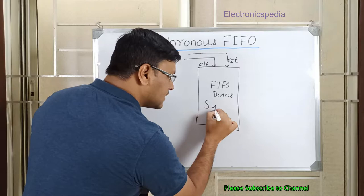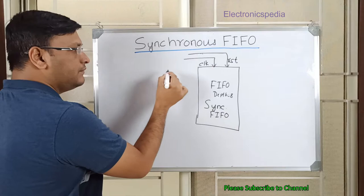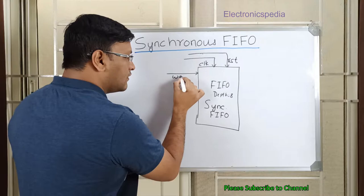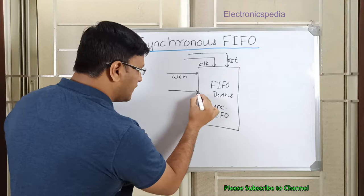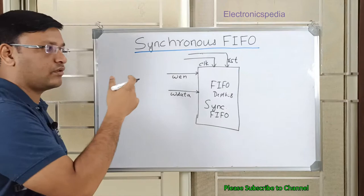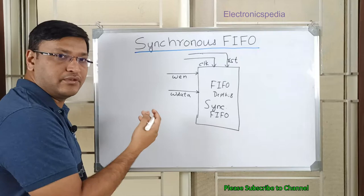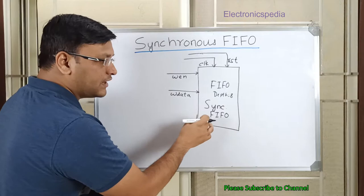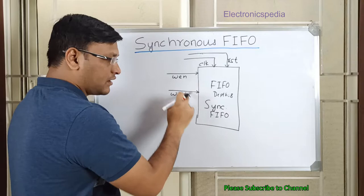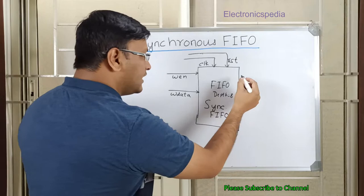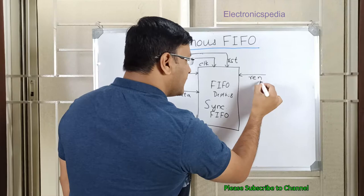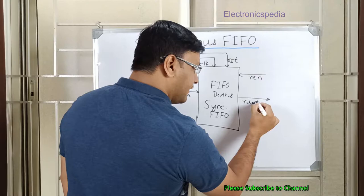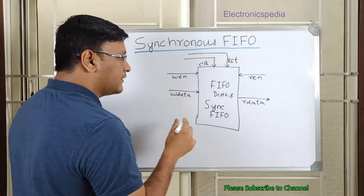The FIFO has a write enable (WEN) signal and write data — the data you are going to write into the FIFO. FIFOs have a clock, enable, and data. Depending on the depth of the FIFO, immediately after reset the write pointer (the address pointer indicating where to write) is set to zero. Similarly, there is a read enable and read data, which is the data that goes out of the FIFO memory.